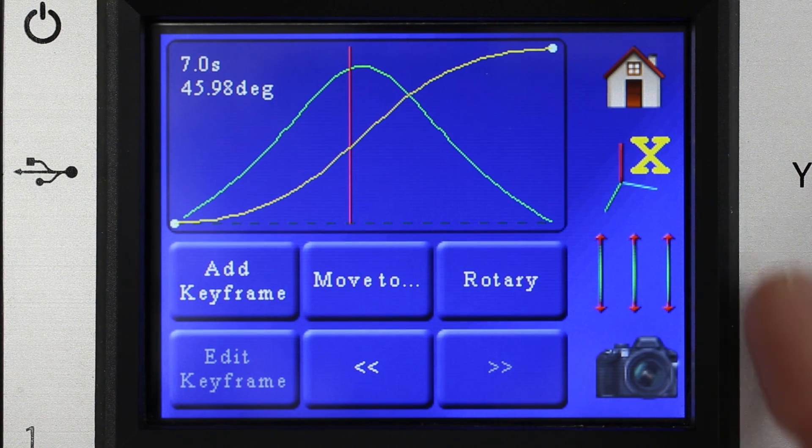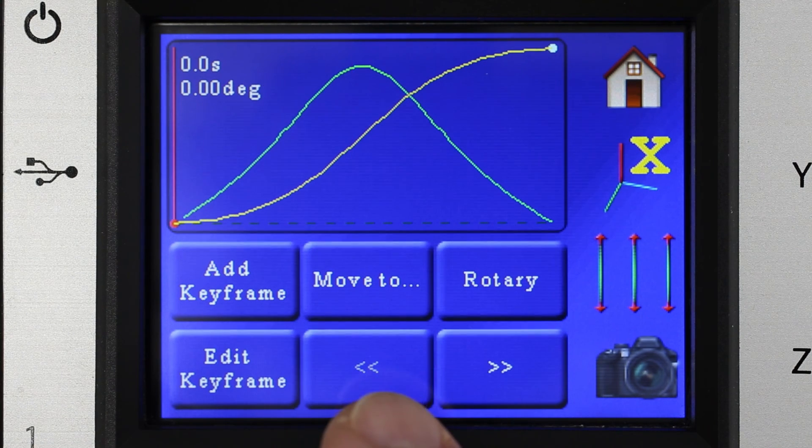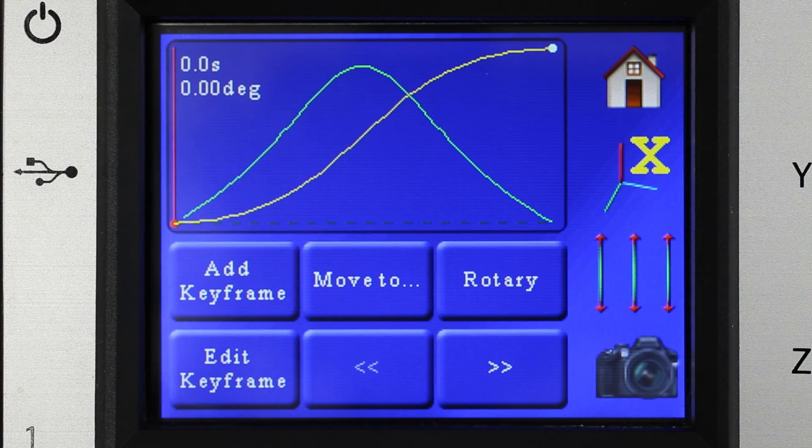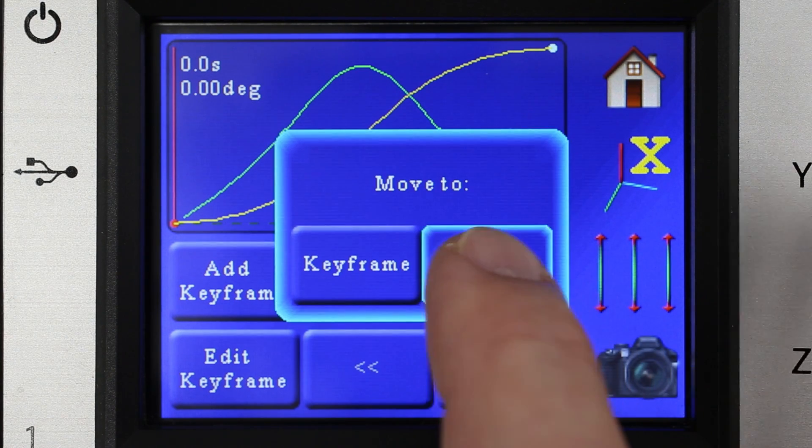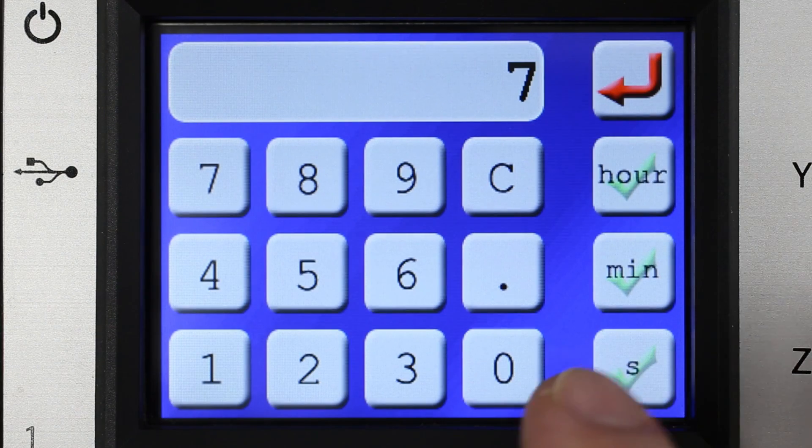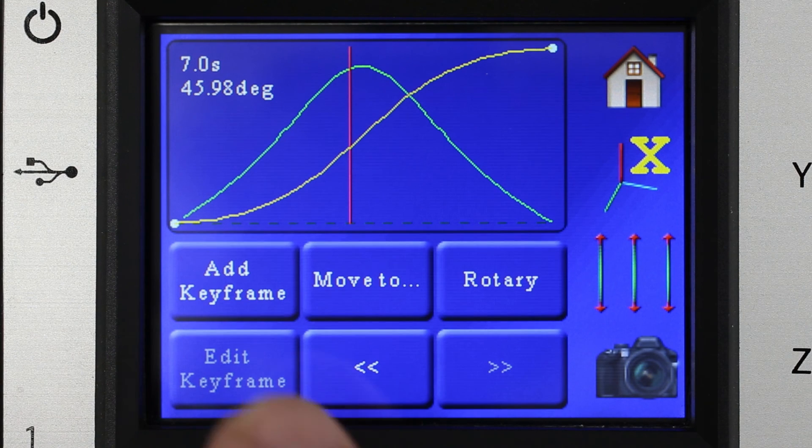So next we want to add a keyframe. Now to do that all you have to do is go to a certain spot on that curve. So let's say we'll move the playhead back to that seven second point. So we do move to seven seconds and then we're going to hit add keyframe.